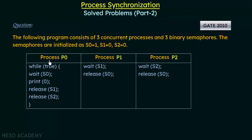We have three processes and this is the code for them. In process P0, we have a while true loop that will run forever. Inside this loop we have wait S0, which checks the value of semaphore S0 — is it free or being held? If free, execution continues. Then it prints 0, and then it releases S1 and S2, setting those semaphores as free so they can be used.